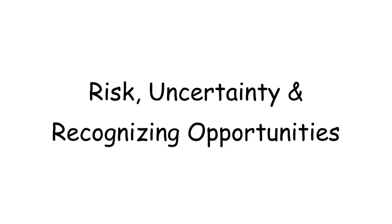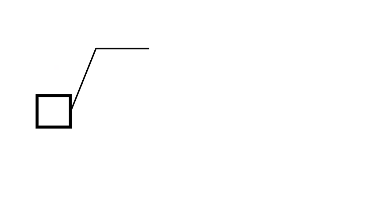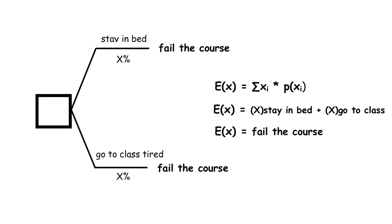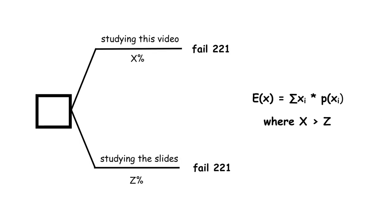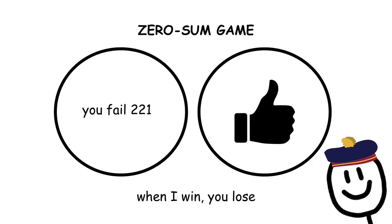Lastly, there's the unit of risk, uncertainty, and recognizing opportunities. While there isn't a formal definition, it is essentially the process of weighing the likelihood of events in a given situation to best assess and decide your actions accordingly. For instance, the decision to stay in bed and skip your morning classes yields a certain probability of failing the course, whilst attending said morning lecture completely exhausted yields an equally unfavorable probability — indicating that both options are comparably equal and your best one is simply to not go to class. Another example: by solely watching this video, you possess a higher likelihood of failing APS-C 221 than by actually studying the material. Although, by throwing up a disclaimer saying that I'm not liable for any student's failure in the course, this elicits a zero-sum game where you inevitably fail the course and give this video a like.